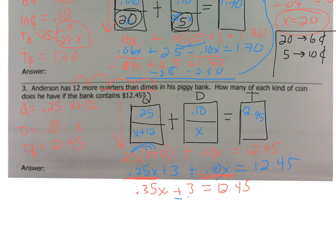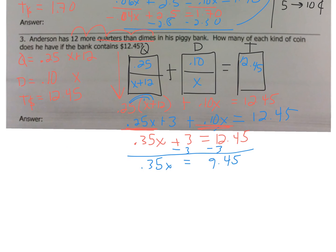Now, like the normal equation, I'm going to minus the 3. So, we get 0.35x equals to 9.45. Now, divide by 0.35. And, you get a grand total of 27.